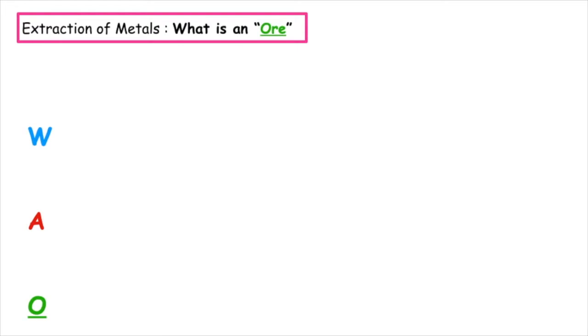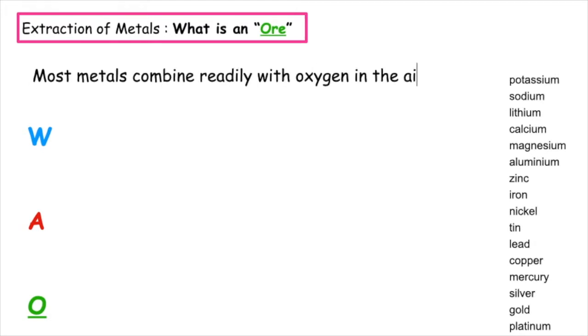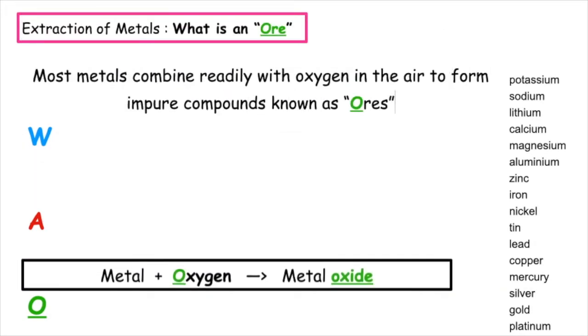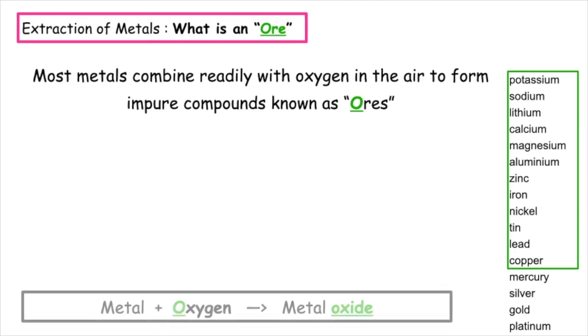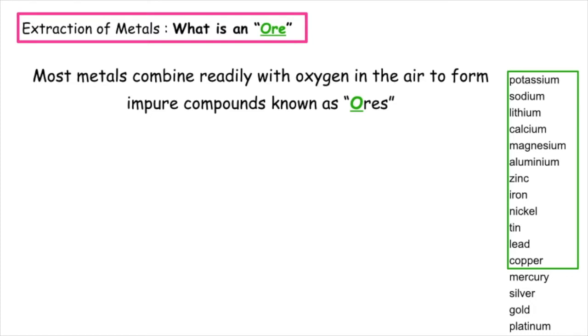So what is an ore? Most metals combine readily with oxygen in the air to form impure compounds known as ores. We already know from previous lessons that copper and above in the reactivity series can react with oxygen to form a metal oxide. This is a metal directly combined with oxygen, which is known as an ore.